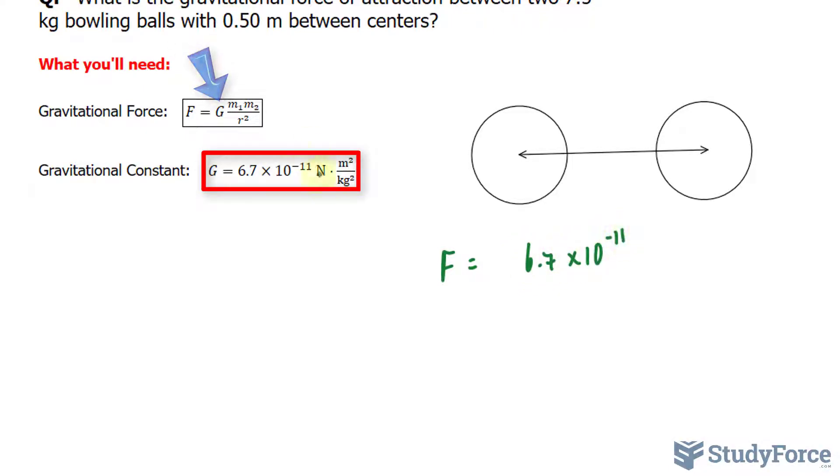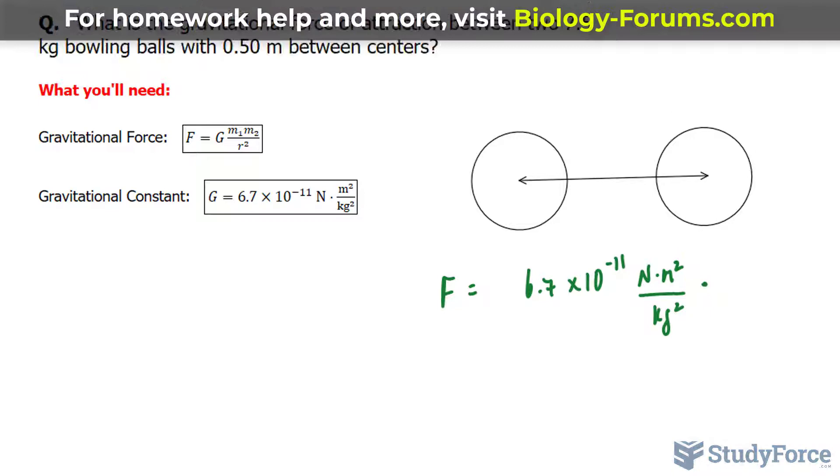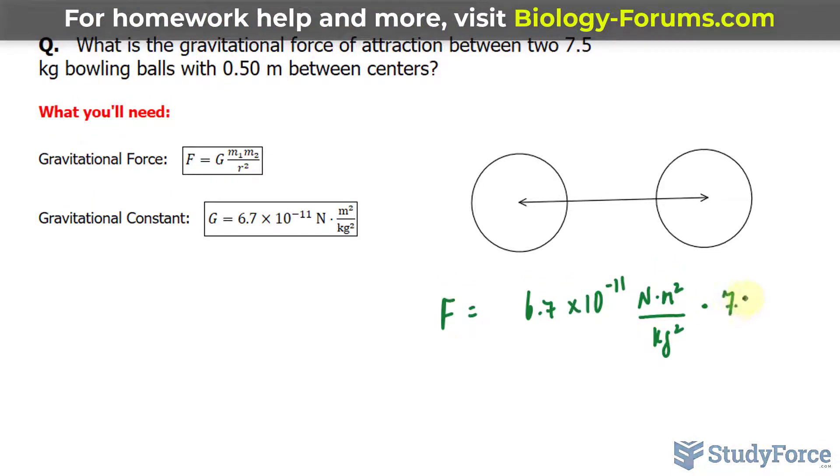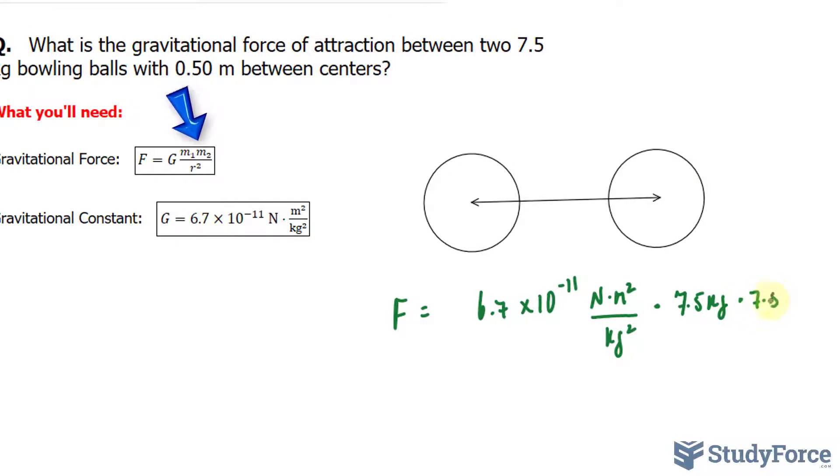11 and the units are newtons times meters squared per kilogram squared and that gets multiplied to the mass of that very first one and the masses are the same so I'll write down 7.5 kilograms and the mass of this one being 7.5 kilograms and all of that gets divided by the radius squared. That represents the distance between the two objects from their centers.